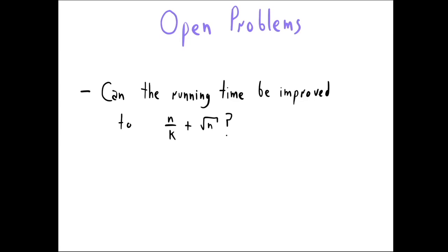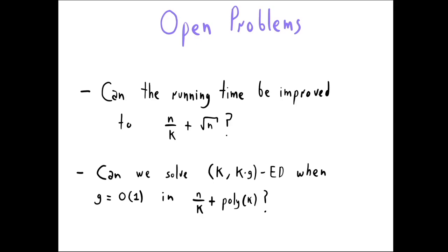Let me leave you with two open problems. First, can we improve the running time of our algorithm to match the lower bound? Second, can we solve the gap problem in time n/k + poly(k) when the gap is constant? I have no idea how to do either of these, and I think it would be really cool to see any progress on them. Thank you for listening.